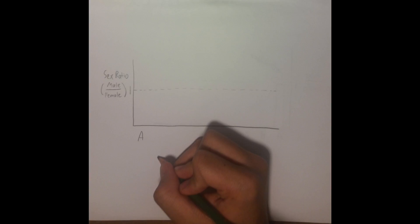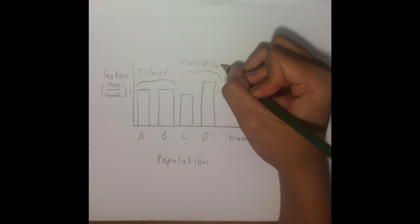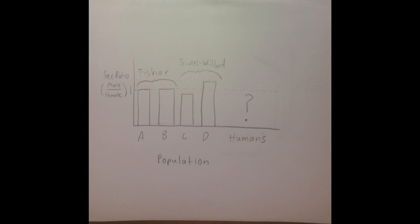So great, some populations have a 1-to-1 ratio, while others deviate from this ratio. The question then becomes, what about humans?